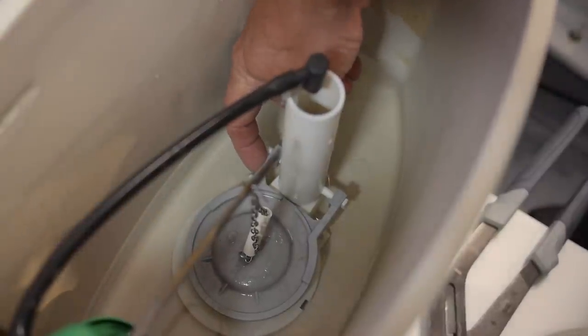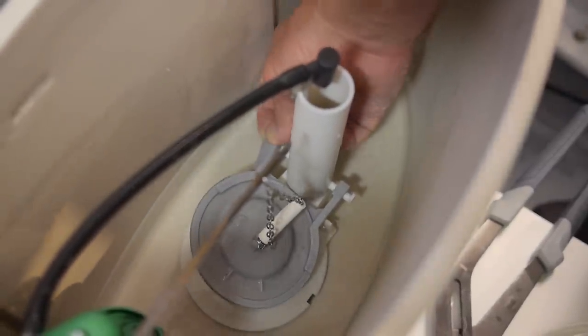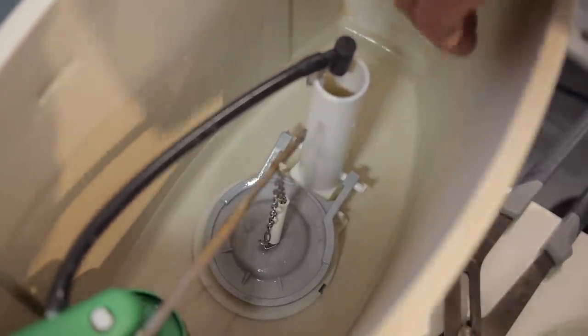Fourth, remove the flapper. It's attached to two mounting posts at the base of the flush valve. Just remove one side at a time.